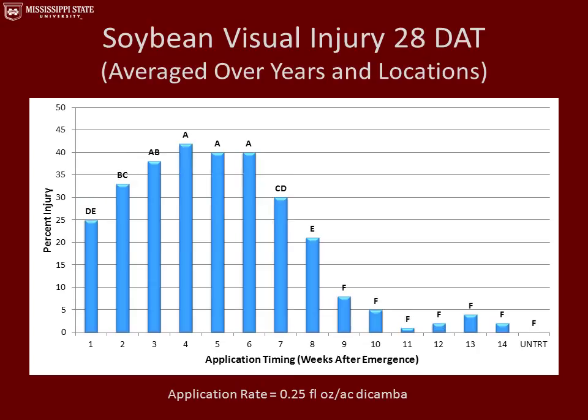This is soybean visual injury 28 days after the applications were made. The greatest amount of injury was seen at weeks three, four, five, and six, ranging from about 37% to 42% visual injury. Once again, after the eight-week application was made, we saw no significant visual injury in the field.